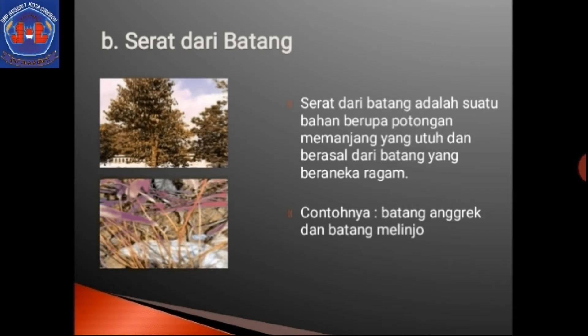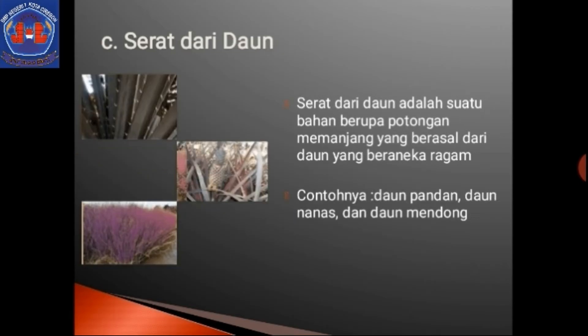Serat dari batang adalah suatu bahan berupa potongan memanjang yang utuh yang berasal dari batang. Misalnya batang anggrek, batang melinjo, batang eceng gondok. Serat dari daun yaitu suatu bahan berupa potongan memanjang yang berasal dari daun. Misalnya daun pandan, daun nanas, daun mendong.